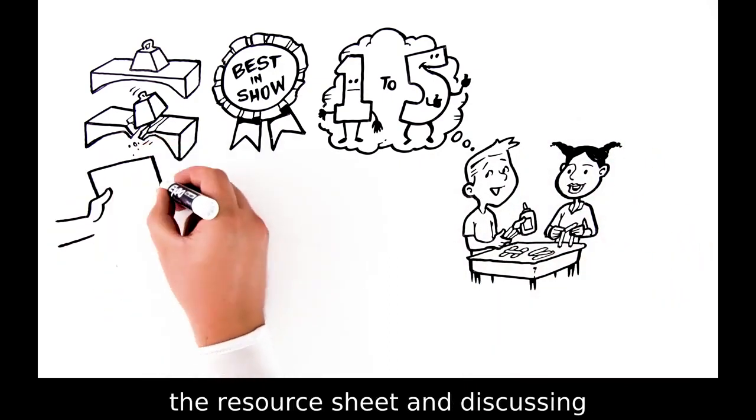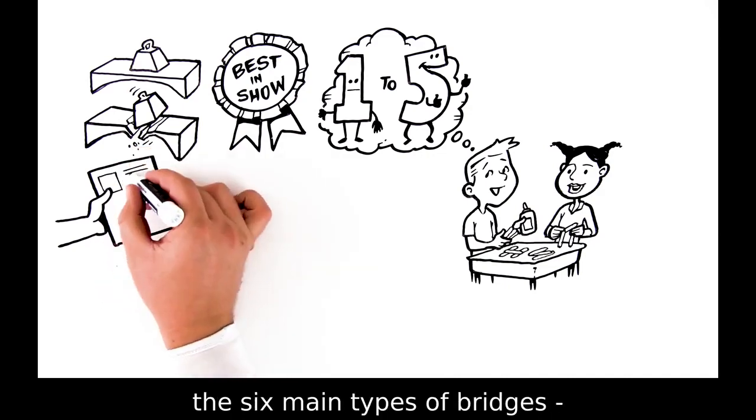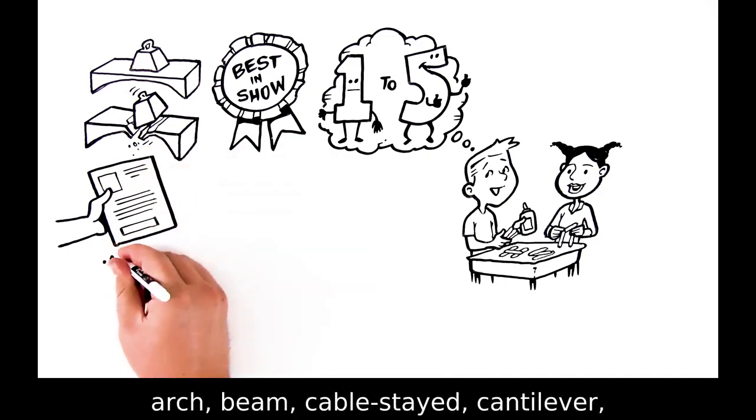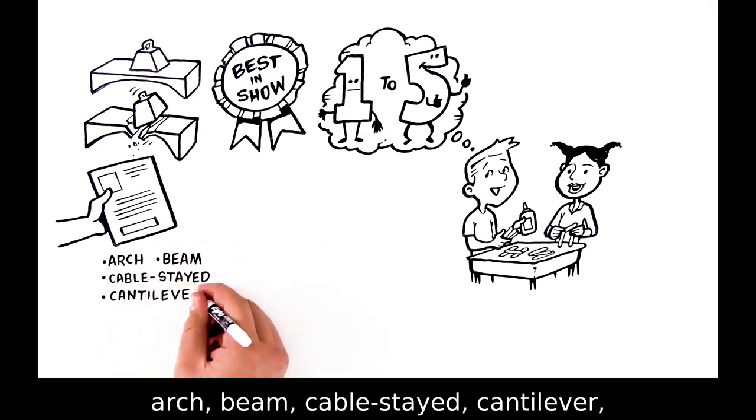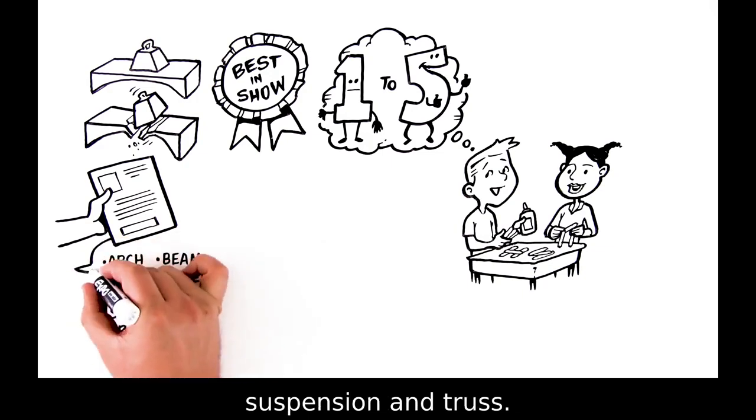Begin by showing students the resource sheet and discussing the six main types of bridges: arch, beam, cable-stayed, cantilever, suspension, and truss.